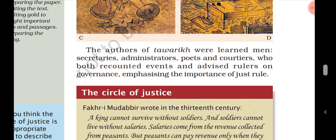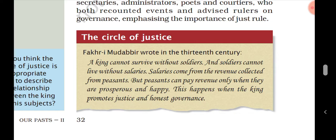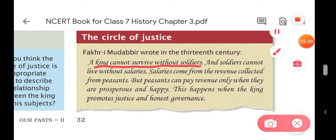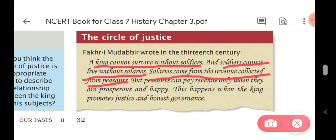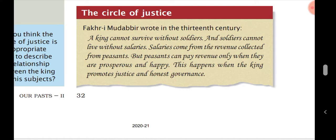These authors wrote only about important people, not about common people. There is a concept called the 'Circle of Justice.' Fakhr-i-Mudabbir wrote in the 13th century: a king cannot survive without soldiers; soldiers cannot live without salaries; salaries come from revenue collected from peasants; but peasants can pay revenue only when they are prosperous and happy — this happens when the king promotes justice and honest government.